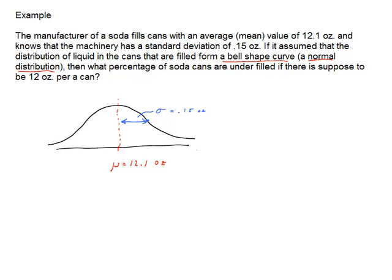In our question, what we're trying to identify is that I have cans being underfilled if they're less than 12 ounces. I want to find what percentage of cans are underfilled, so I'm looking at here's 12, I want this percentage or area that's under that curve. If I can figure out what this percentage is for the total area under the curve, I have the percentage of soda cans that are being underfilled.